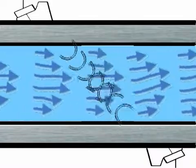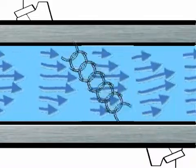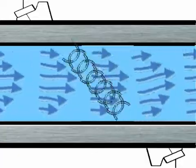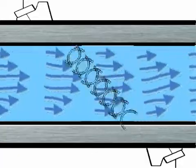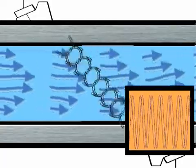When we have a signal sent simultaneously from both sides of the pipe, the signal traveling with the flow will arrive faster than the signal traveling against the flow.